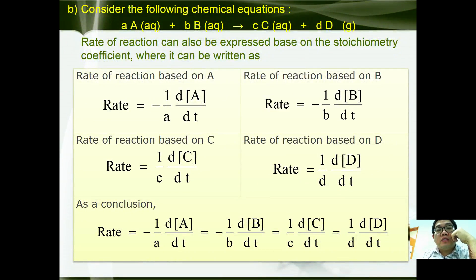So consider the following chemical equation where we have aA + bB gives cC + dD. For all the rate of reactions can be written based on the following equations: rate equals -1/a dA/dt. For reactant B, rate equals -1/b dB/dt. Since C is a product, therefore it is positive, 1/c dC/dt. And for D, which is also a product, 1/d dD/dt. So as a conclusion, they can be written together in one line as: rate = -1/a dA/dt = -1/b dB/dt = 1/c dC/dt = 1/d dD/dt.